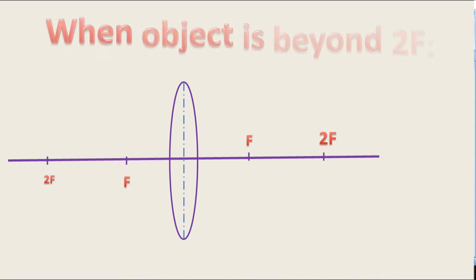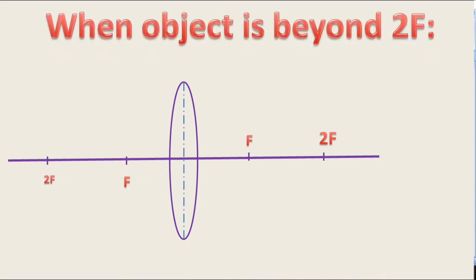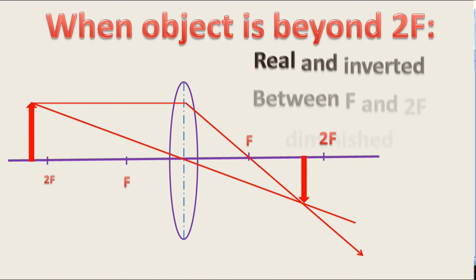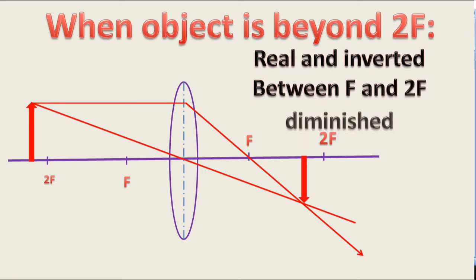When the object is beyond 2F, the rays of light coming from the object pass through the lens and intersect between F and 2F. The nature of the image is real and inverted. It is formed between F and 2F and diminished in size — that is, the image is smaller than the object.